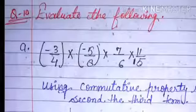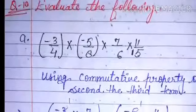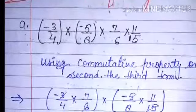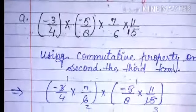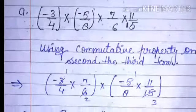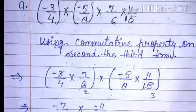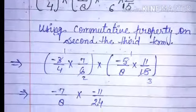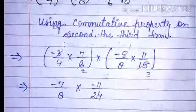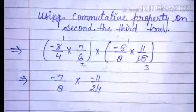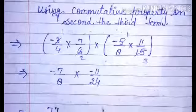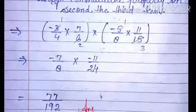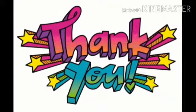Question number ten: evaluate the following. Part a: minus three upon four multiplied by minus five upon eight multiplied by seven upon six multiplied by eleven upon fifteen. By using commutative property, we pair the first and third terms in one bracket — (minus three upon four and seven upon six) — and the second and fourth terms in another bracket — (minus five upon eight and eleven upon fifteen). We pair numbers whose numerators and denominators are possibly divisible. Dividing within each bracket we get minus seven upon eight and minus eleven upon twenty four, and finally the answer is seventy seven upon one hundred ninety two.